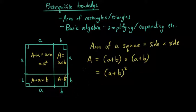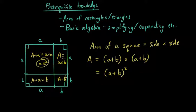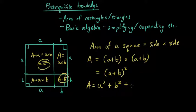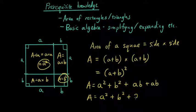Now we're going to look at the area of this whole square based on these four expressions. By adding these four expressions together, we can also say the area is equal to A squared plus B squared plus AB plus AB, which simplifies to A squared plus B squared plus 2AB.